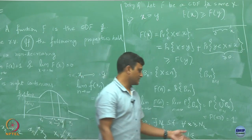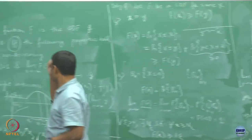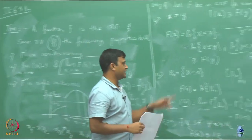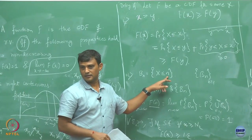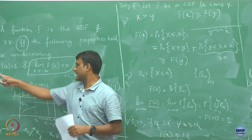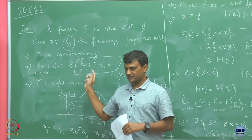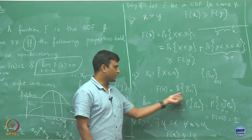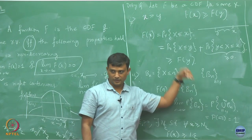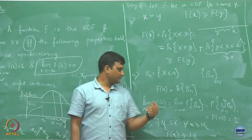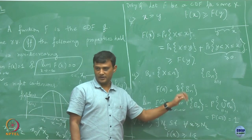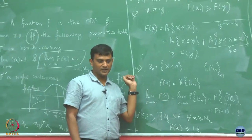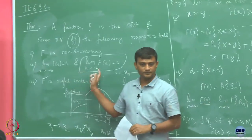Similarly, to show the limit as x goes to minus infinity of f(x) equals 0, replace b_n by b_{-n} = {X ≤ -n}, which gives a decreasing sequence. Apply the continuity of probability for decreasing sets, and by the same argument coming from the negative direction, you get P(intersection of b_{-n}) = P(empty set) = 0.